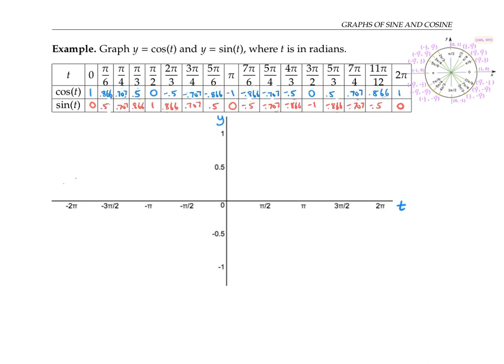Now I'll plot the points for cosine and connect the dots to get a graph of y equals cosine t from t equals zero to t equals two pi.